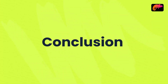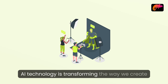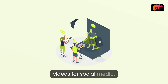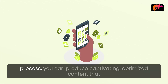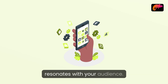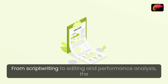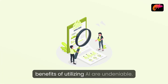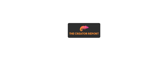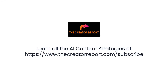Conclusion. AI technology is transforming the way we create videos for social media. By integrating AI tools into your video production process, you can produce captivating, optimized content that resonates with your audience. From script writing to editing and performance analysis, the benefits of utilizing AI are undeniable. Learn all the AI content strategies at https://www.thecreatoreport.com/subscribe.